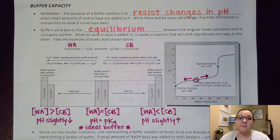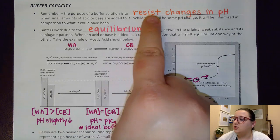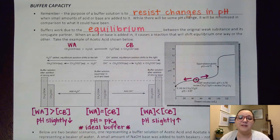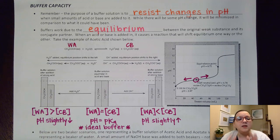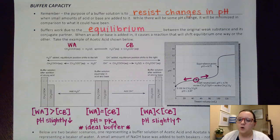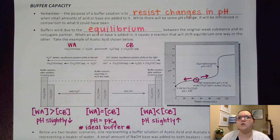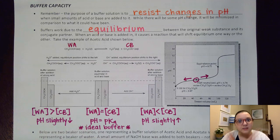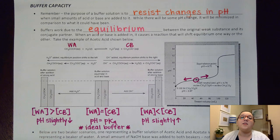Ms. Marusik here, and in this video we're going to talk about buffer capacity. As a reminder from our previous video, the purpose of a buffer solution is to resist changes in pH that occur when small amounts of acid or base are added to it. There's going to be some pH change, but it's going to be very minimal in comparison to what could have taken place had that buffer system not been in place. A buffer system works because there's an equilibrium that exists between the original weak substance and its conjugate partner, and when you add that additional amount of acid or base, it shifts that equilibrium, which minimizes the change in pH.